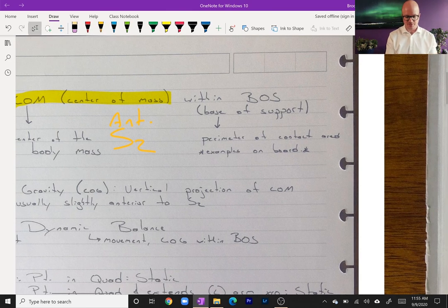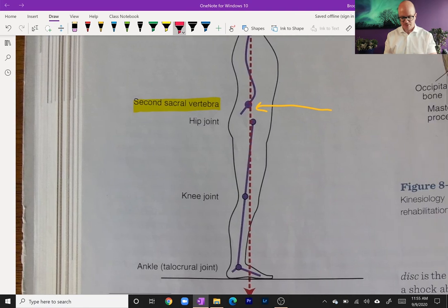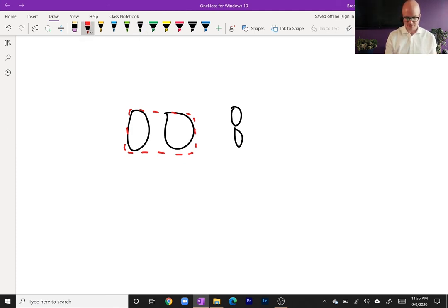The second thing is the base of support—BOS, base of support—and this is the perimeter of contact. So let's go over here. If I'm standing, circles or ovals are going to represent my feet like this. My base of support is that area. If I stand tandem, my base of support is a little smaller and it's narrow, so this is going to challenge us in different ways.